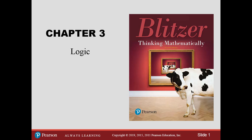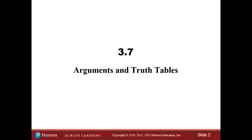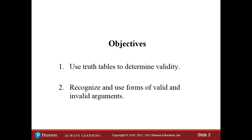Okay class, welcome back. Today we're going to finish up Chapter 3 with Section 7, and we're going to talk about arguments and truth tables — how do we set up an argument, and how do we figure out the validity of an argument using truth tables. We're going to use truth tables to determine validity, and we're also going to recognize and use forms of valid and invalid arguments. Those are the two objectives for this section.